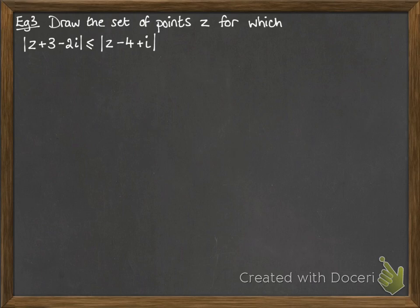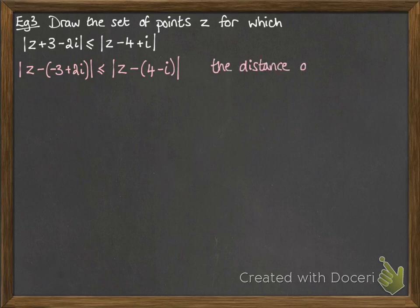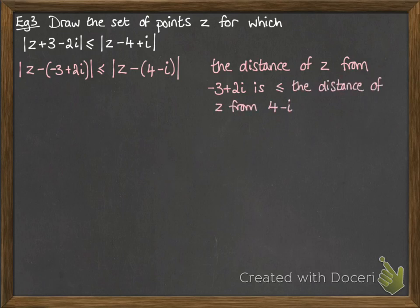Okay, how about drawing the set of the points z for which |z + 3 - 2i| is less than or equal to |z - 4 + i|. I'm going to do the same thing of changing that into z minus a number. So we've got z minus negative 3 plus 2i and z minus 4 minus i. So this is saying that the distance between z and minus 3 plus 2i is always less than the distance between z and 4 minus i. So it's always closer to minus 3 plus 2i than it is to 4 minus i. So how can we draw that?